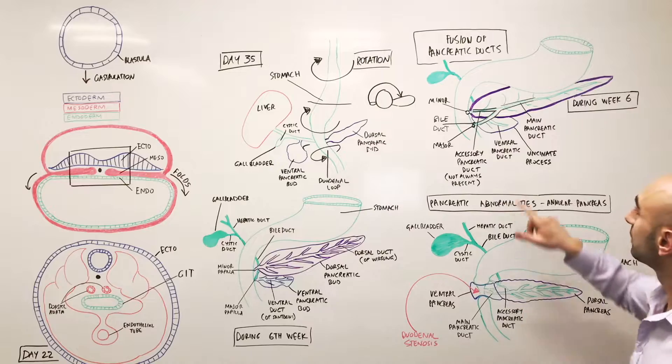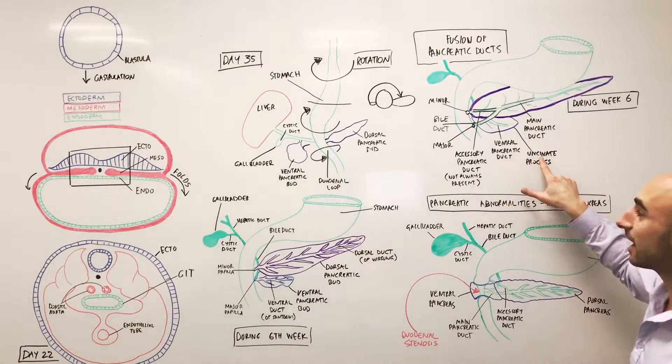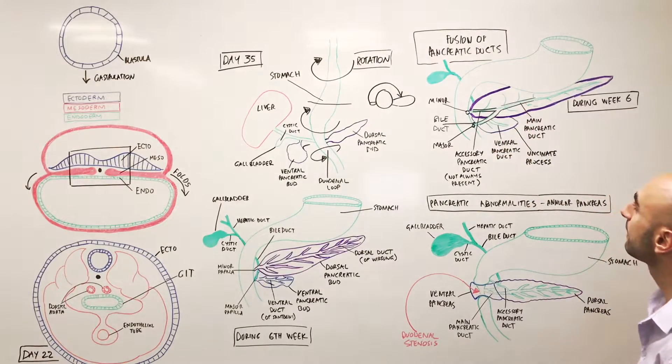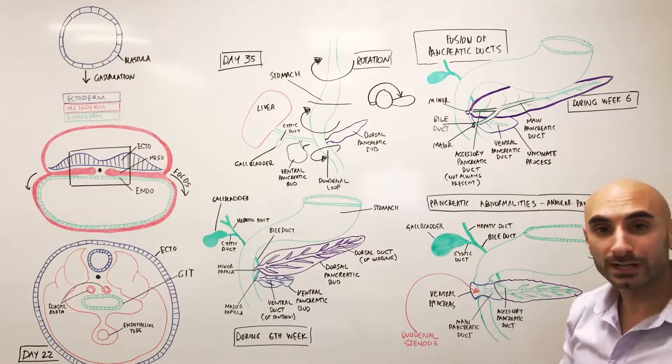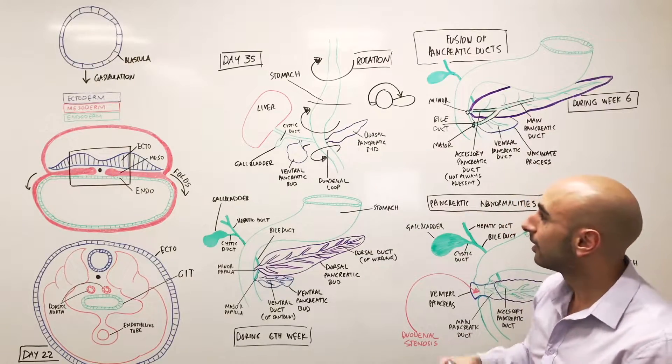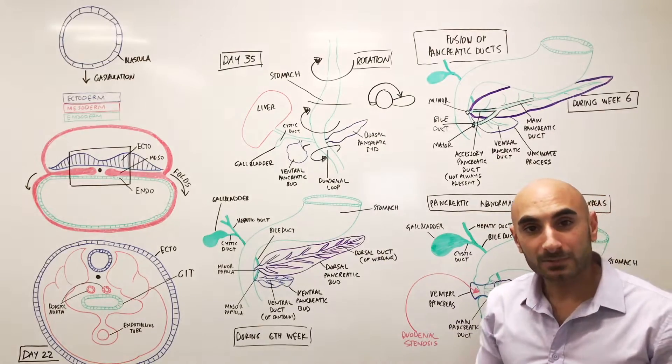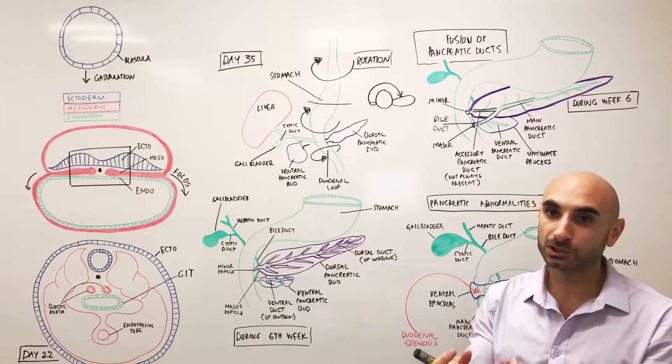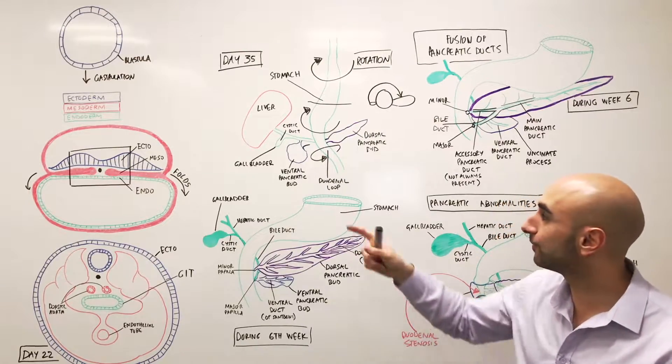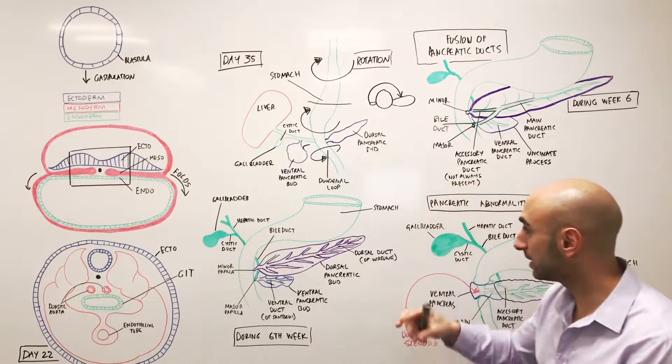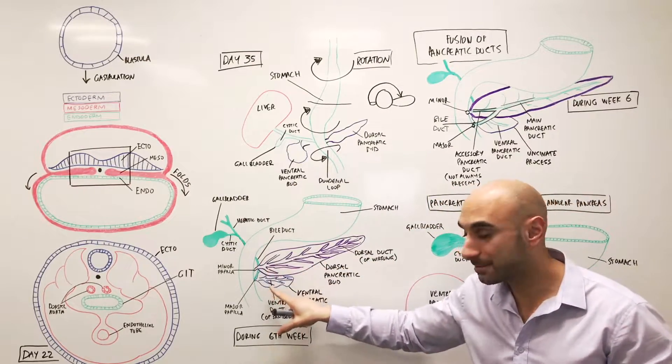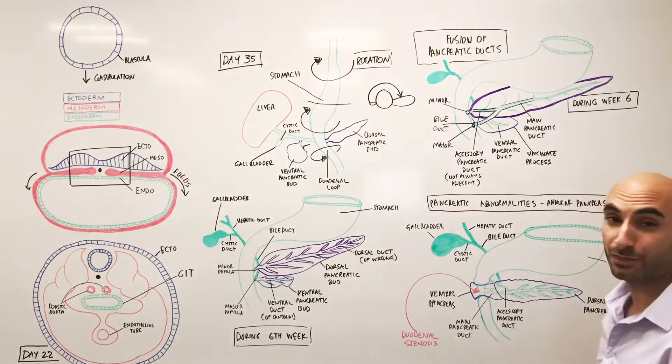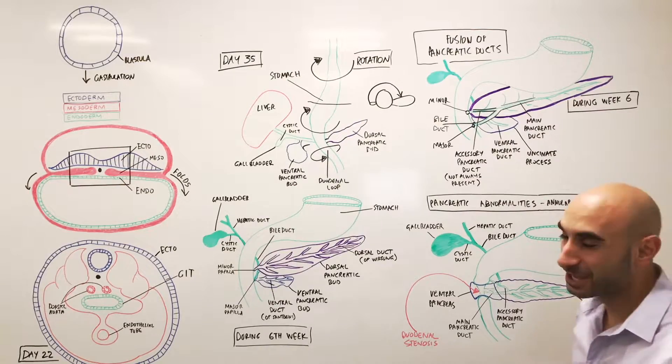And again, the ventral pancreatic duct makes the uncinate process and the inferior part of the head of the pancreas. It's that simple. To recap, a quick summary. Your pancreas comes from endoderm. The pancreas, two buds, come off duodenal tissue. The ventral rotates, meets the dorsal, and sits under and behind it. The ducts fuse. That's it. And you have your pancreas.